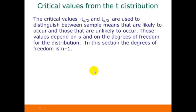The critical values negative t alpha over 2 and t alpha over 2 are used to distinguish between sample means that are likely to occur and those that are unlikely to occur. These values depend on the value of alpha and on the degrees of freedom for the distribution. The degrees of freedom is related to the sample size n. In this section, the degrees of freedom will be just n minus 1.